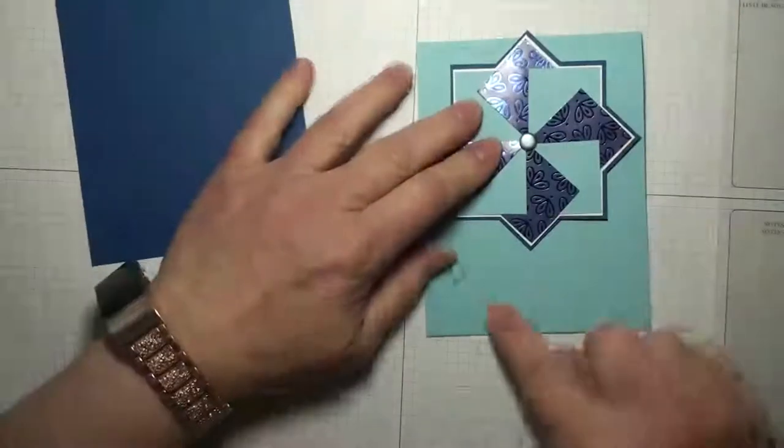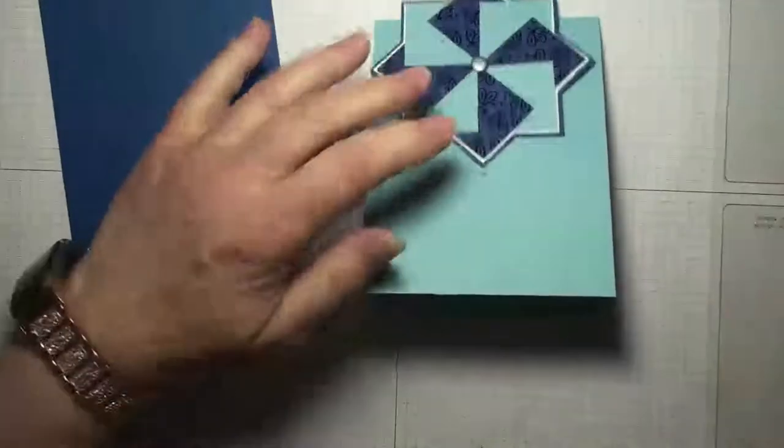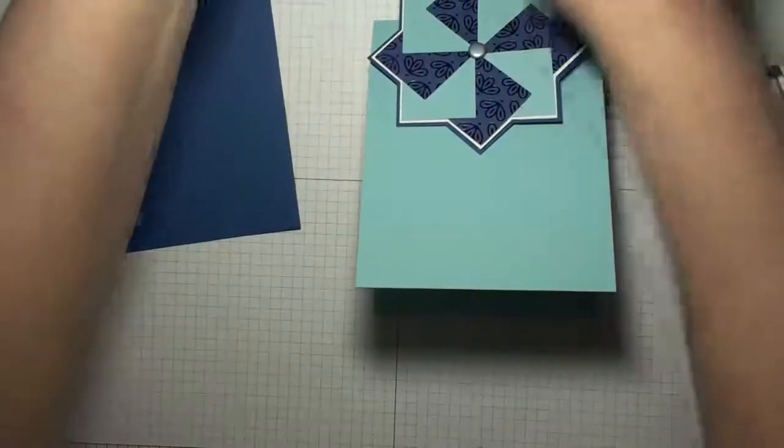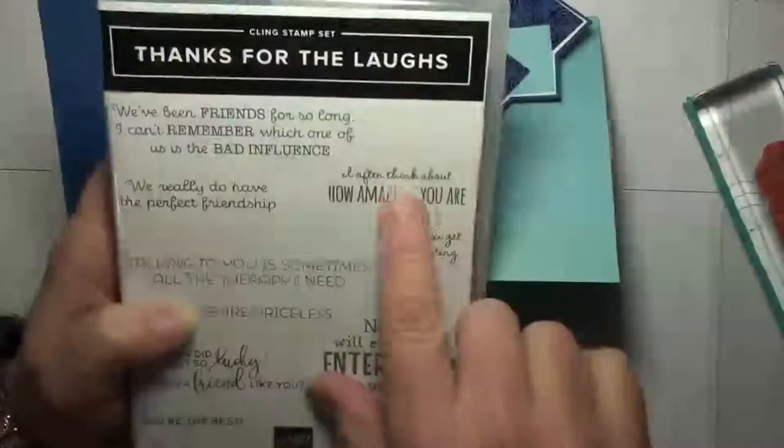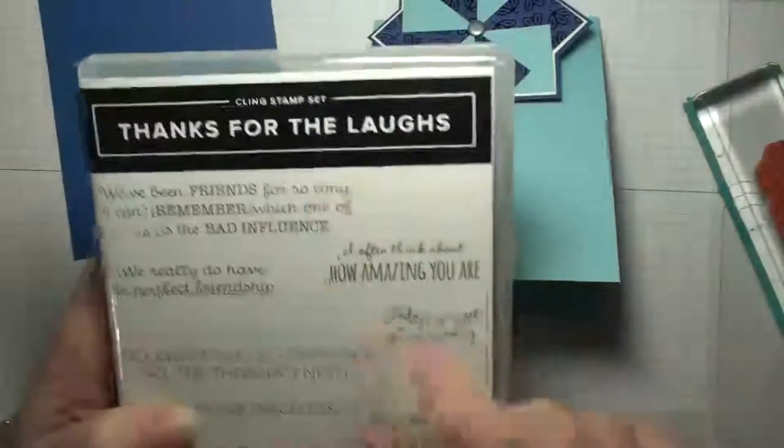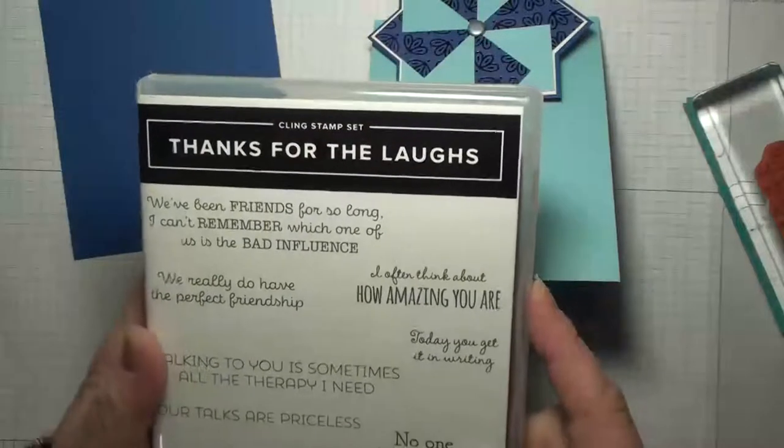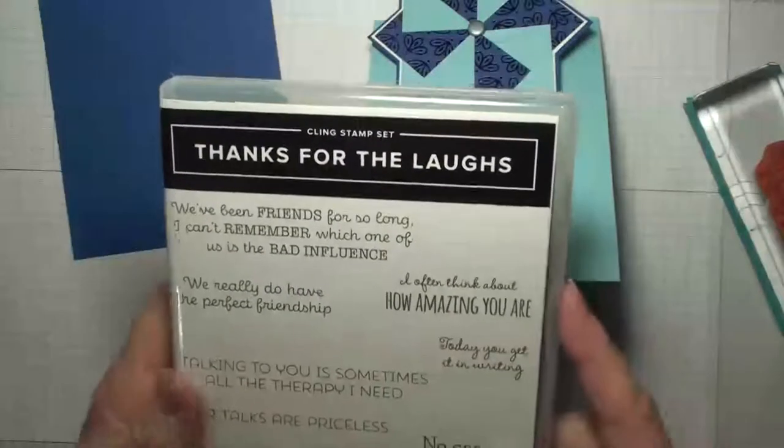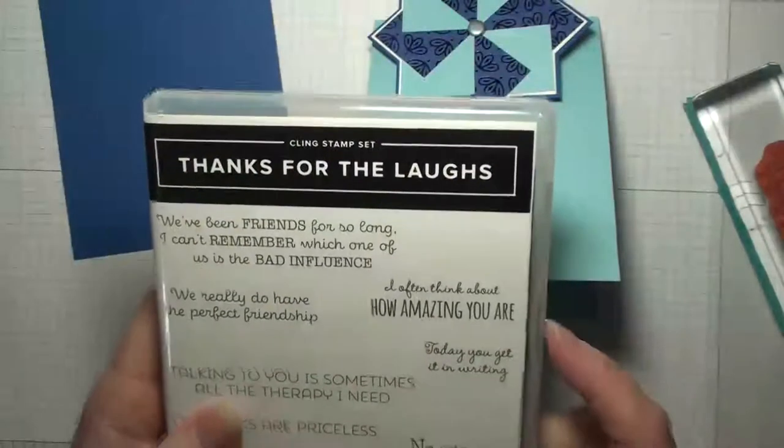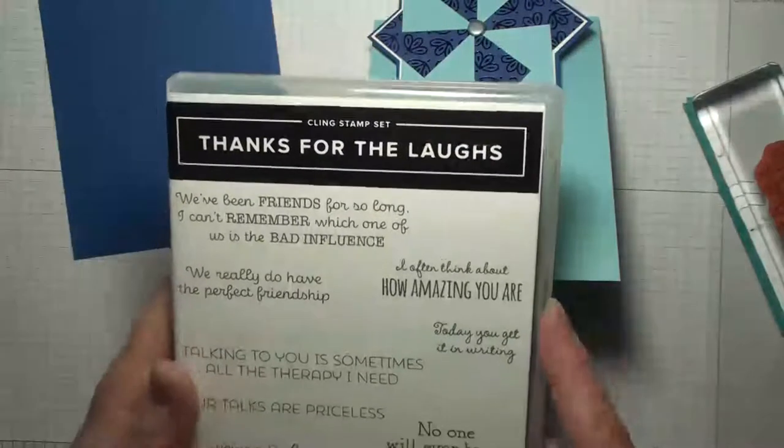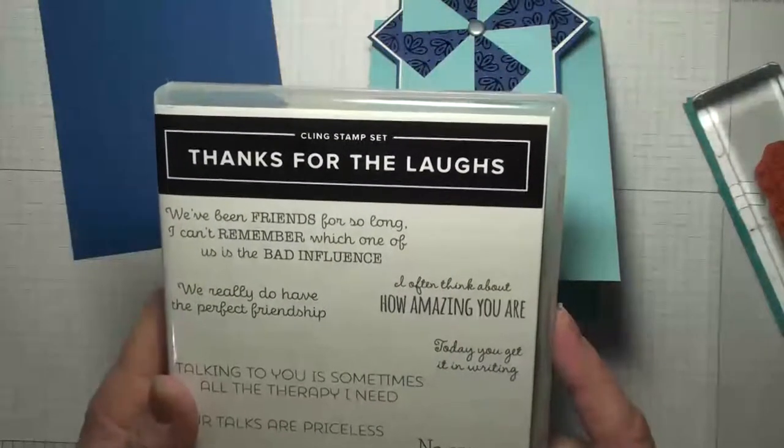So I'm going to put a sentiment right down here. And this sentiment is, I often think about how amazing you are. It's from the Thanks for the Laughs stamp set and this is in the 2020 Spring Mini Catalog. It will be retiring the 3rd of June. So if you want this set, you need to order it soon.